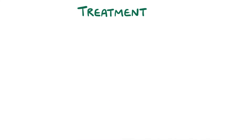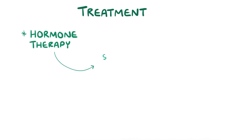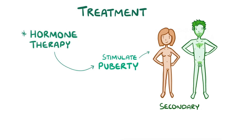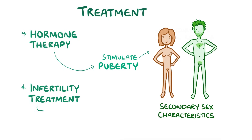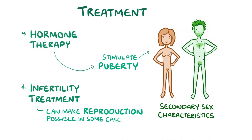Treatment is focused on hormone therapy, which can stimulate puberty and the development of secondary sex characteristics. There's also infertility treatment, which can make reproduction possible in some cases.